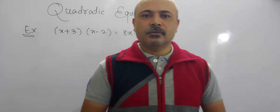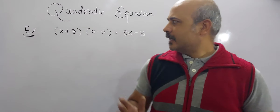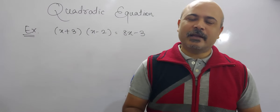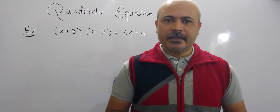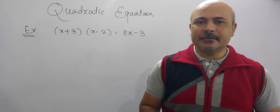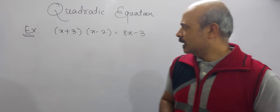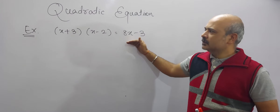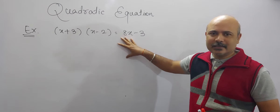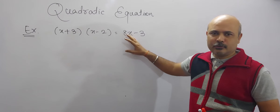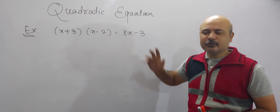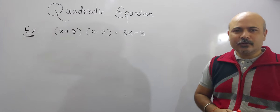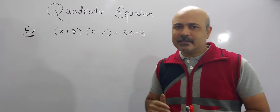Hello students, today we are going to write a quadratic equation in standard form and find the values of a, b, and c. We have already prepared similar questions in the last video. Now we will write this equation in standard form — whether this equation is a quadratic, cubic, or linear equation, we don't know, but after simplifying we are going to find out what type of equation it is.